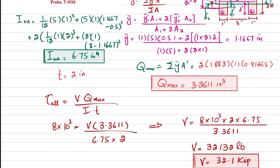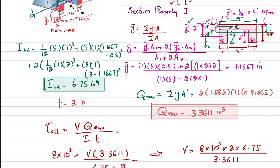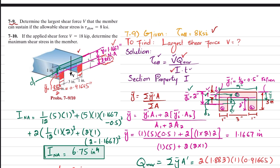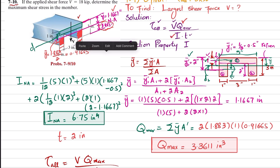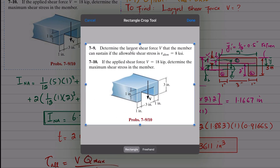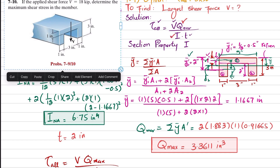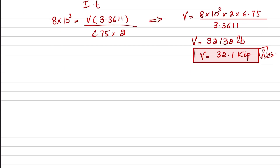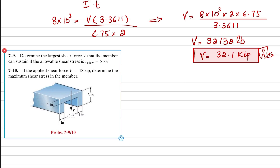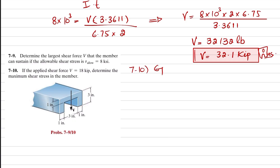This is the answer to question 7-9. Now we move to question 7-10. In 7-10, we are given V = 18 kips and we have to find the maximum shear stress.